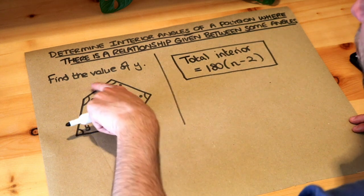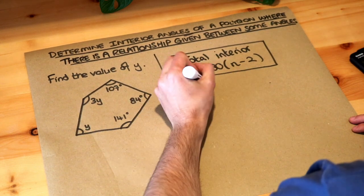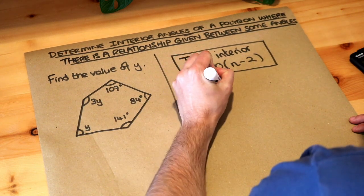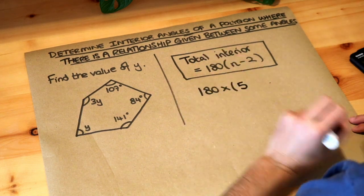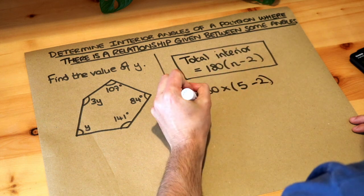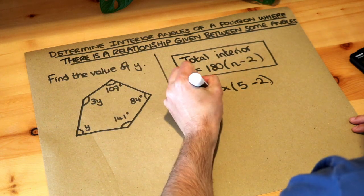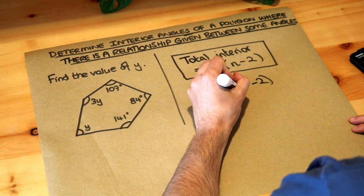Now how many sides does this polygon have? 1, 2, 3, 4, 5. So we do 180 multiplied by n minus 2, so 5 because n is 5, 5 sides minus 2, and if we do that on the calculator or in our heads that gives us 540 degrees.